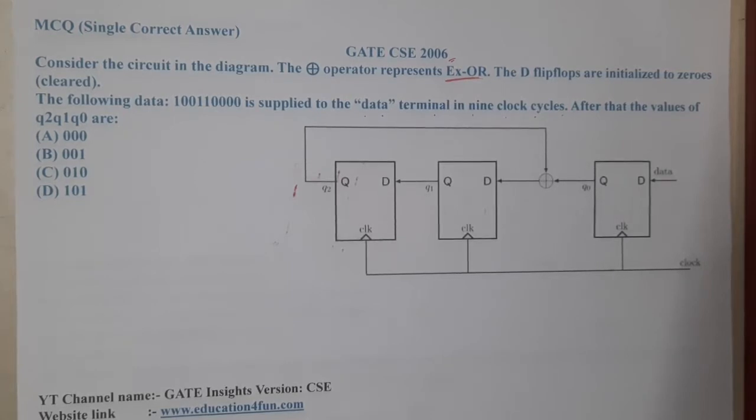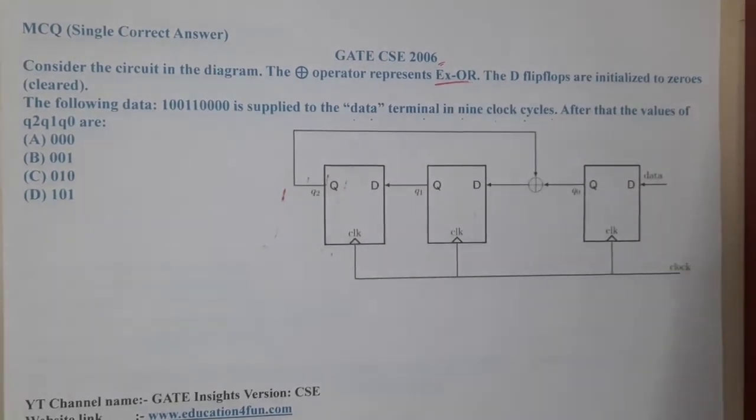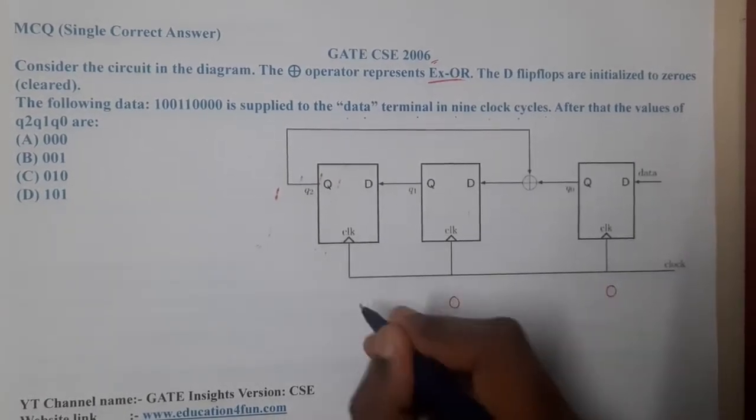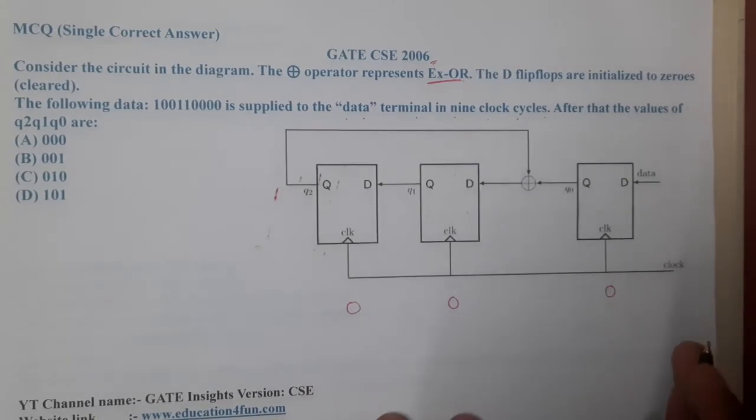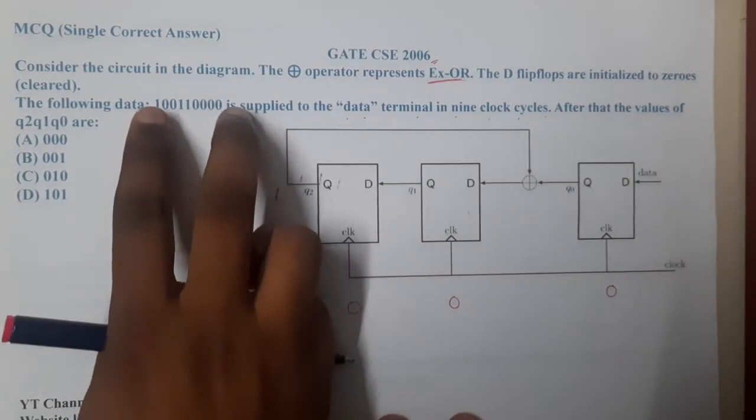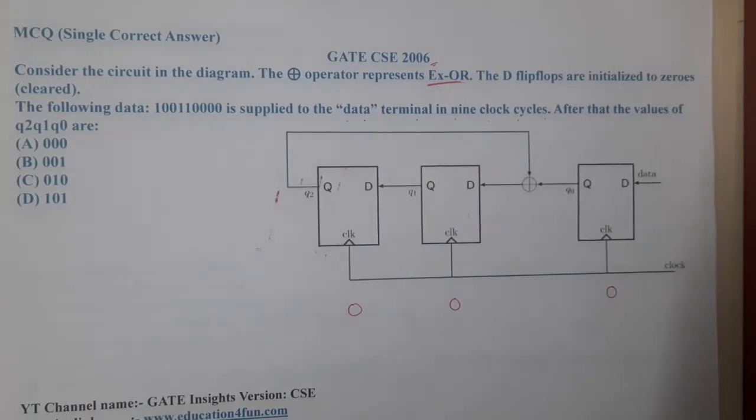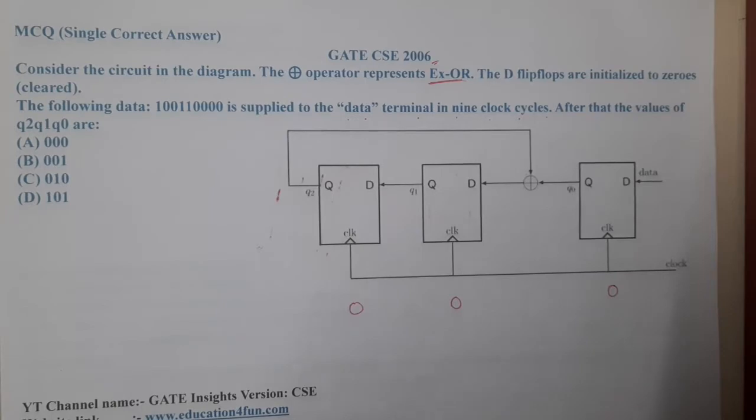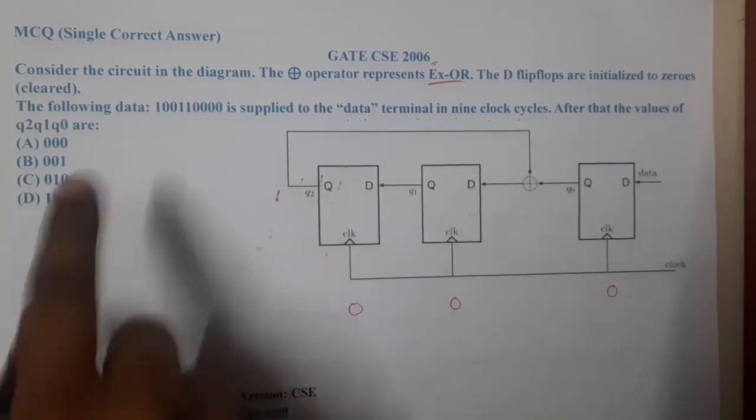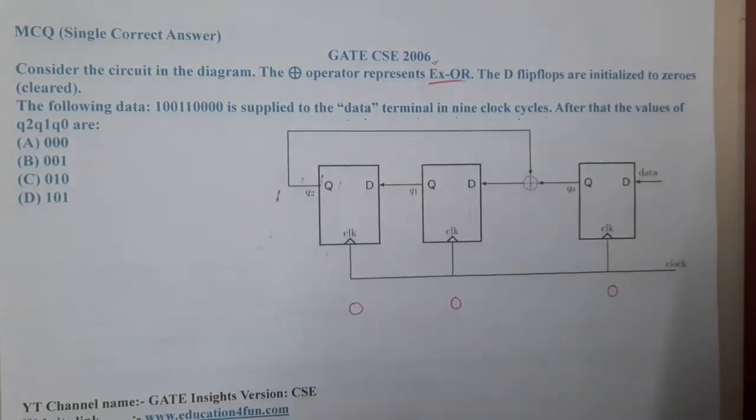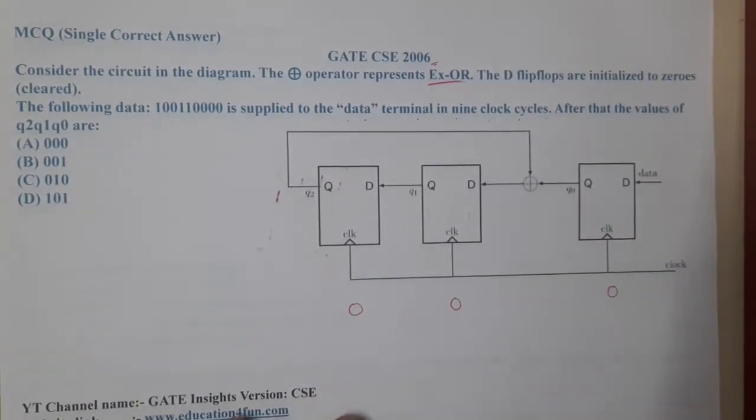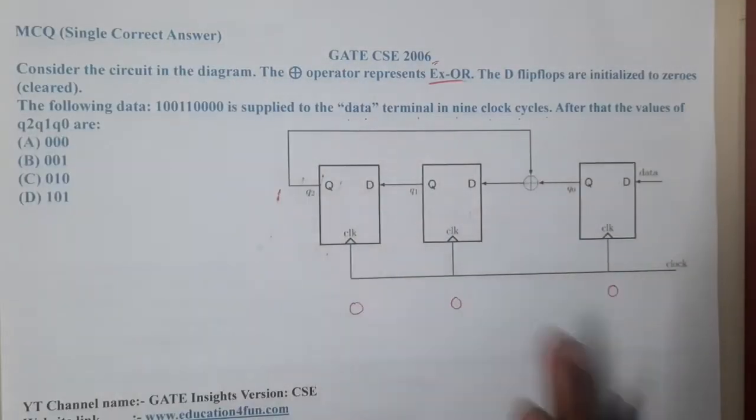Let's start. What they are saying is in each clock, one value - we are having zeros initially, after that we are pushing our particular data into it. Did they give from which side, MSB to LSB or in which format we are pushing? The data is supplied to the data terminal in nine clocks. They did not say in which order, so let's push in the same order from MSB to LSB.